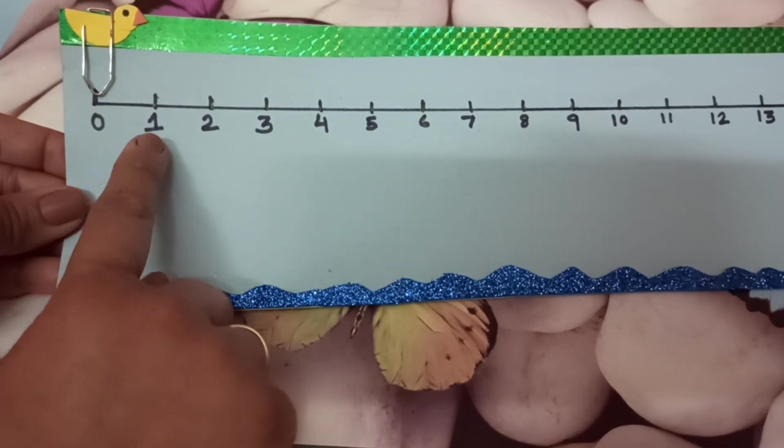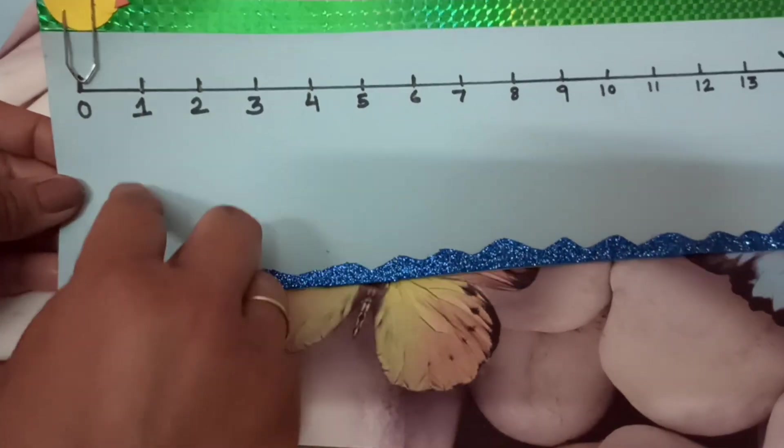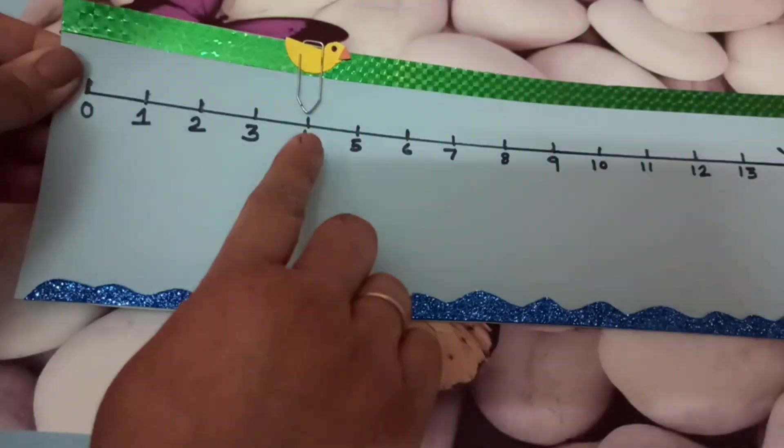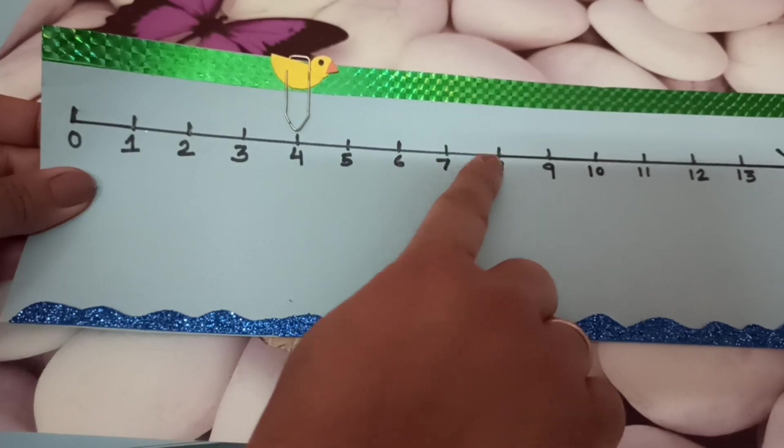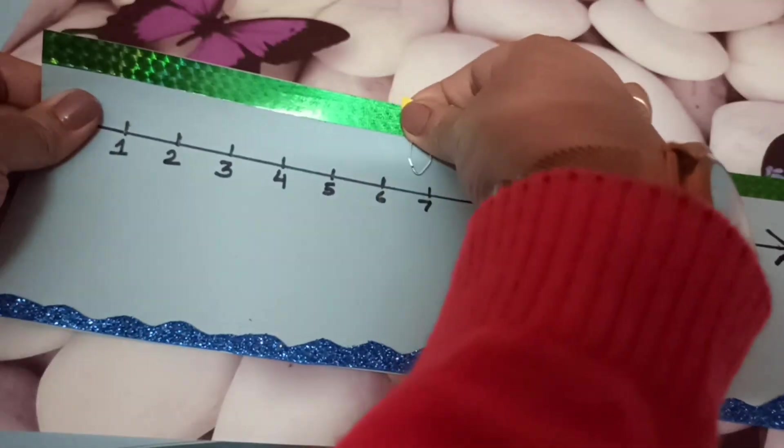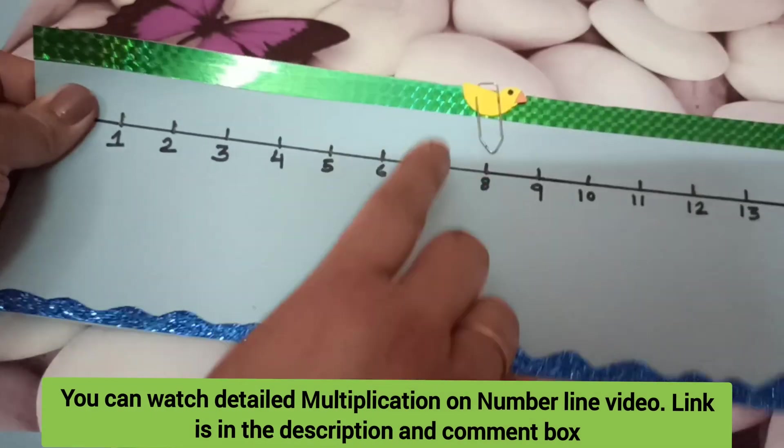Our duck will take 2 jumps but in a group of 4. We have counted and duck will slide on number 4. This was the first jump and again the jump will be in the group of 4. The duck has stopped on number 8 and this is our answer.